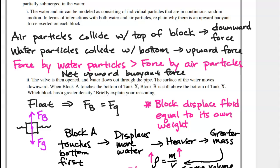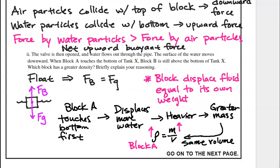Since block A touches the bottom first, it displaces more water. Since it displaces more water, we know that it is heavier and has more mass. Since these two blocks have the same volume, and density is mass over volume, the block that has more mass has a greater density. Since block A has more mass, it has a greater density.